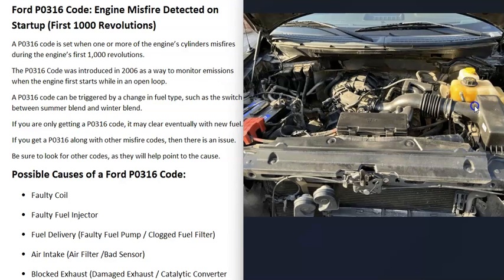This code is a little notorious — it was introduced in 2006 because the government wanted vehicles to monitor emissions while the vehicle was in open loop. Before 2006, the computer would only start monitoring emissions after the vehicle warmed up and the O2 sensors started reporting to the computer in closed loop. Since the government wanted emissions monitored while the vehicle was still cold, Ford created a way to do this using what's called a misfire monitor.